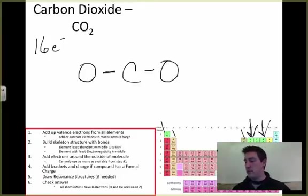I've used two, four electrons, and I have 16 total I get to use. So four, five, six, seven, eight, nine, ten, eleven, twelve, thirteen, fourteen, fifteen, sixteen. So I've used up all my electrons.